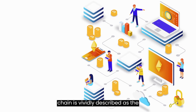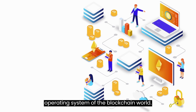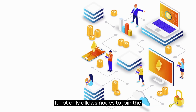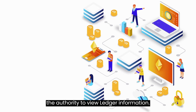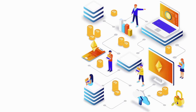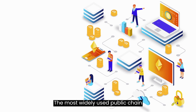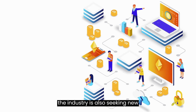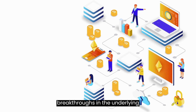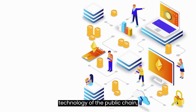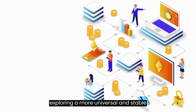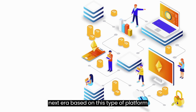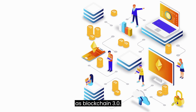The public chain is vividly described as the operating system of the blockchain world. It not only allows nodes to join the network freely, but all nodes also have the authority to view ledger information. The most widely used public chain platform is Ethereum. However, the industry is also seeking new breakthroughs in underlying public chain technology, exploring a more universal and stable public chain platform, and defining the next era based on this type of platform as blockchain 3.0.